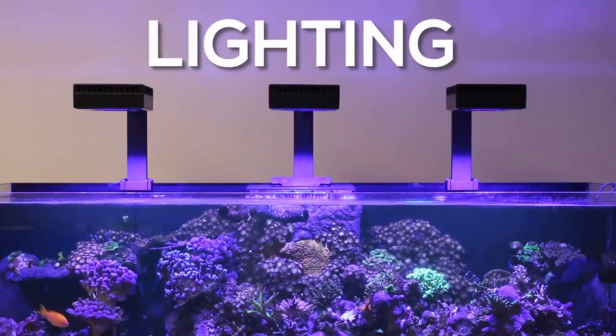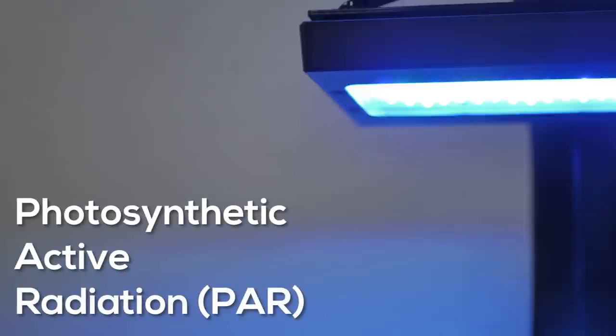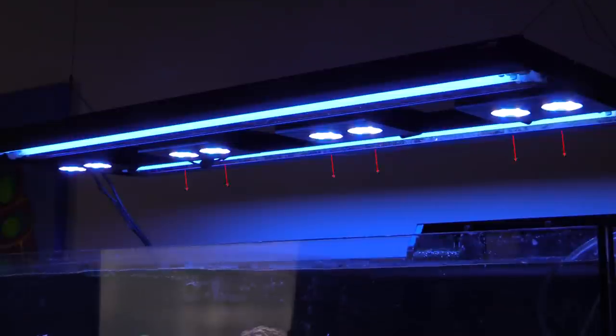Let's jump right into the first pillar, lighting. With reef lighting, it's all about providing photosynthetic active radiation, or PAR. PAR is the light wavelengths symbiotic algae in the coral tissue need for photosynthesis. All high-quality reef lights provide light in the PAR spectrum.